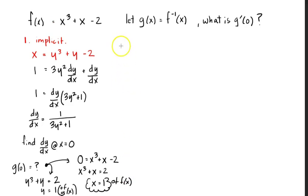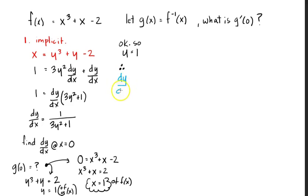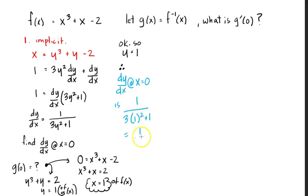So y equals 1. Now I know — I just simply say, therefore, dy/dx at x equals 0 is 1 over 3 times 1 squared plus 1, and that is going to be equal to 1 over 3 plus 1, which is 1 over 4. So that's one way to solve this problem.